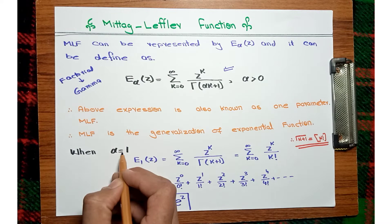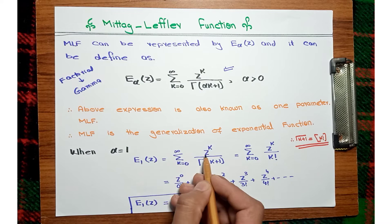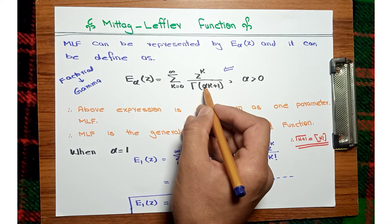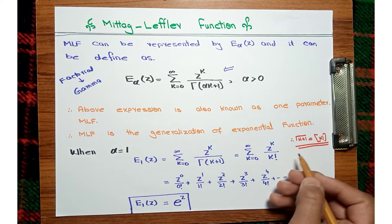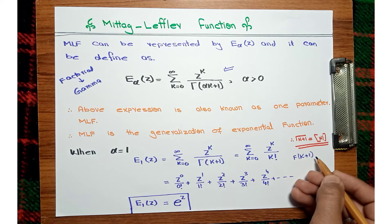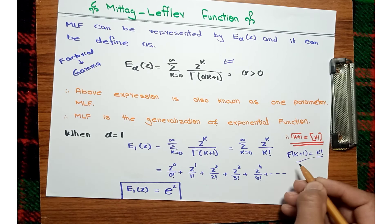When alpha equals 1, E_1(z) equals the sum from k equals 0 to infinity of z to the k over gamma of k plus 1. By using the property of the gamma function, gamma of k plus 1 equals k factorial.